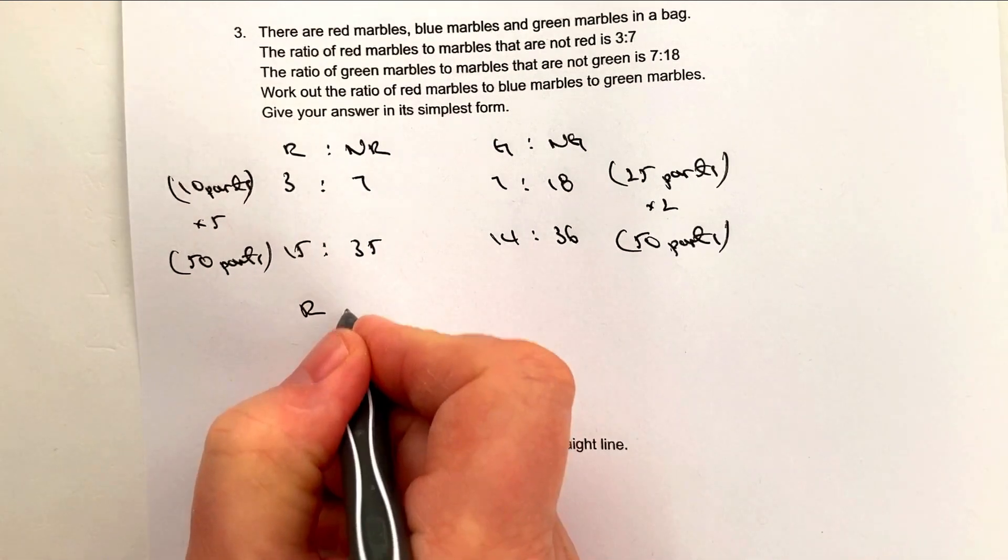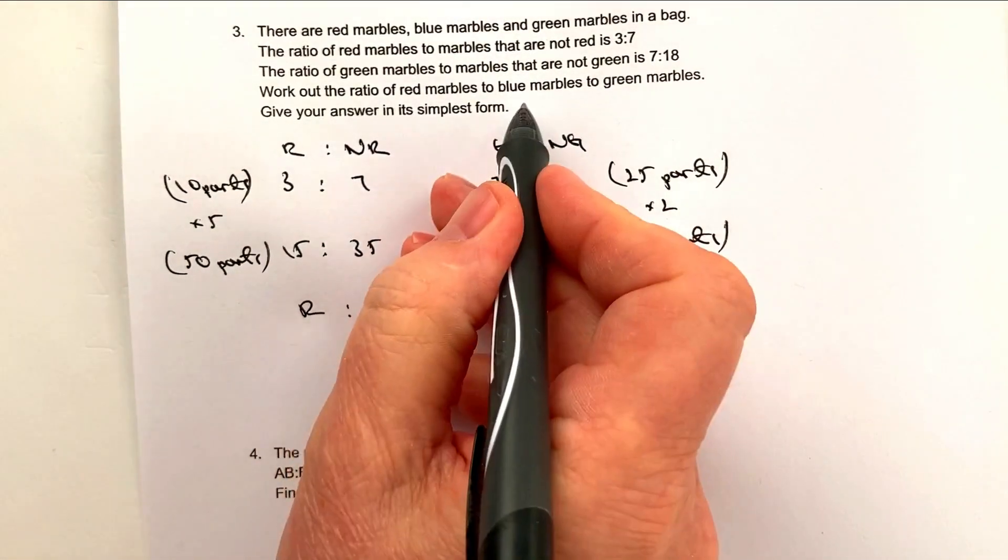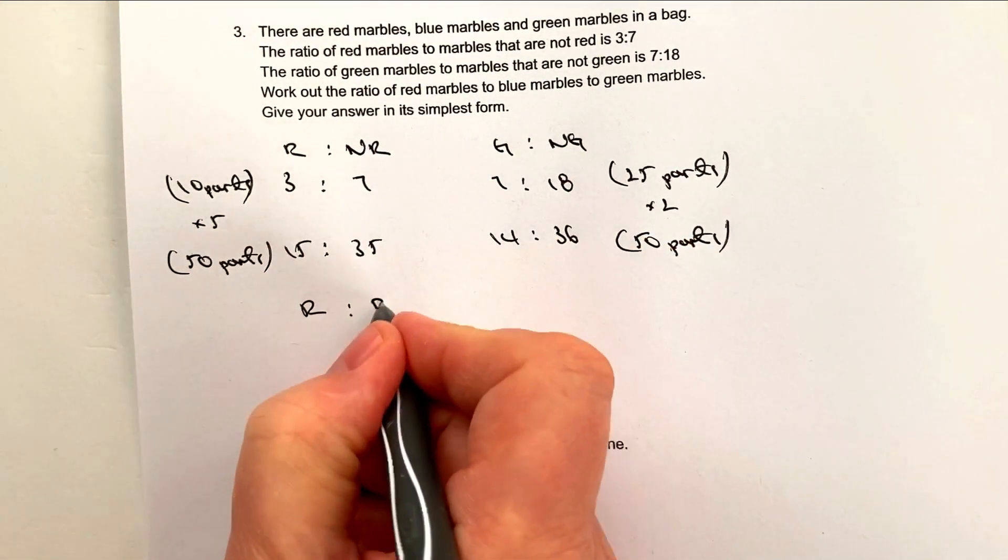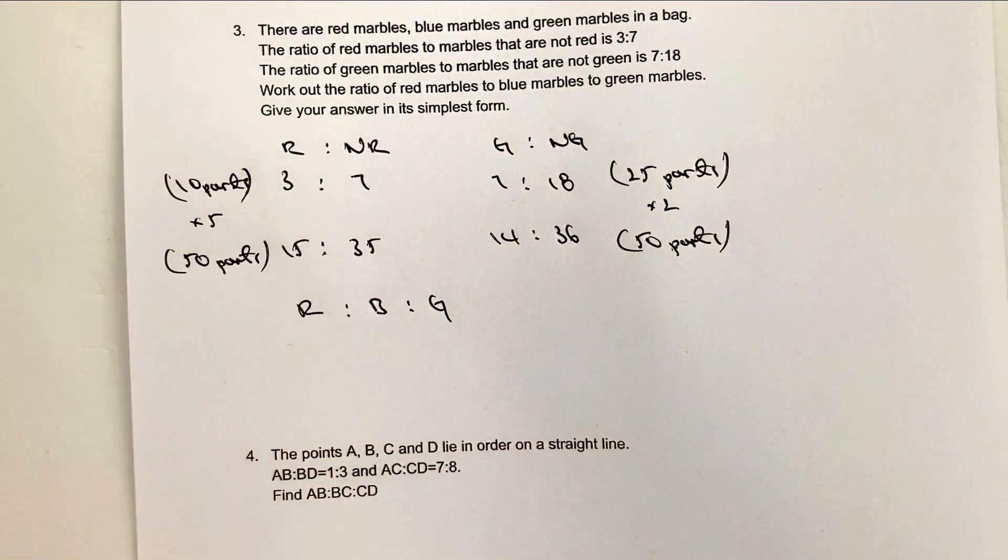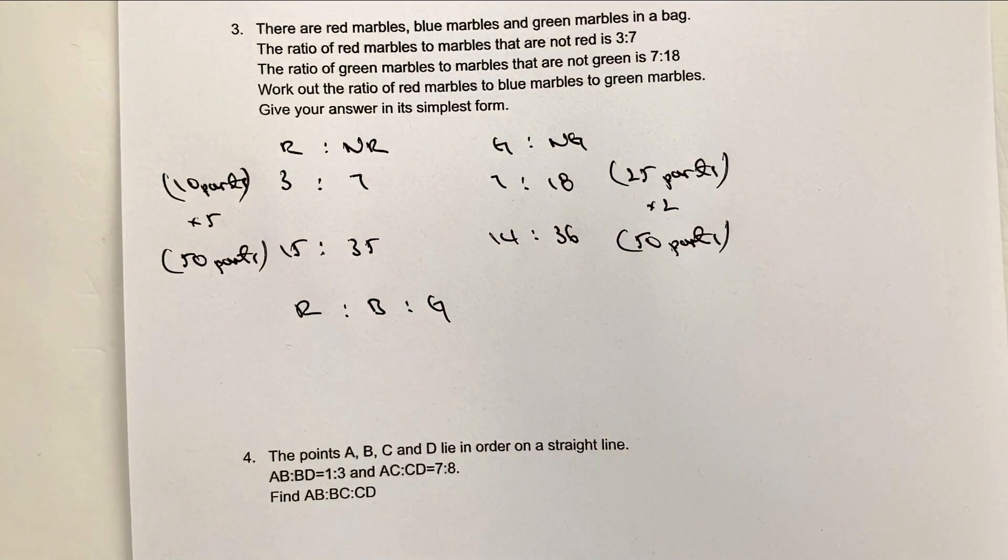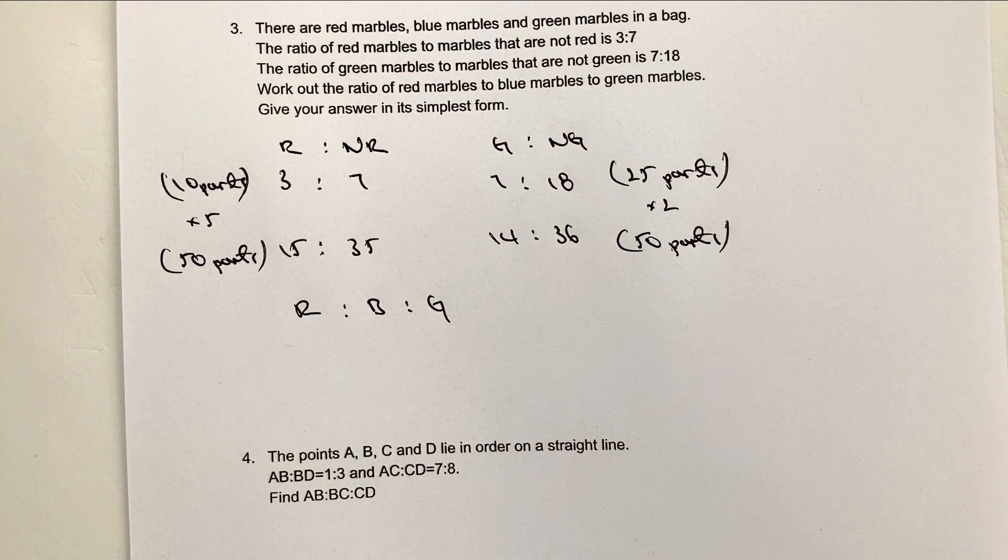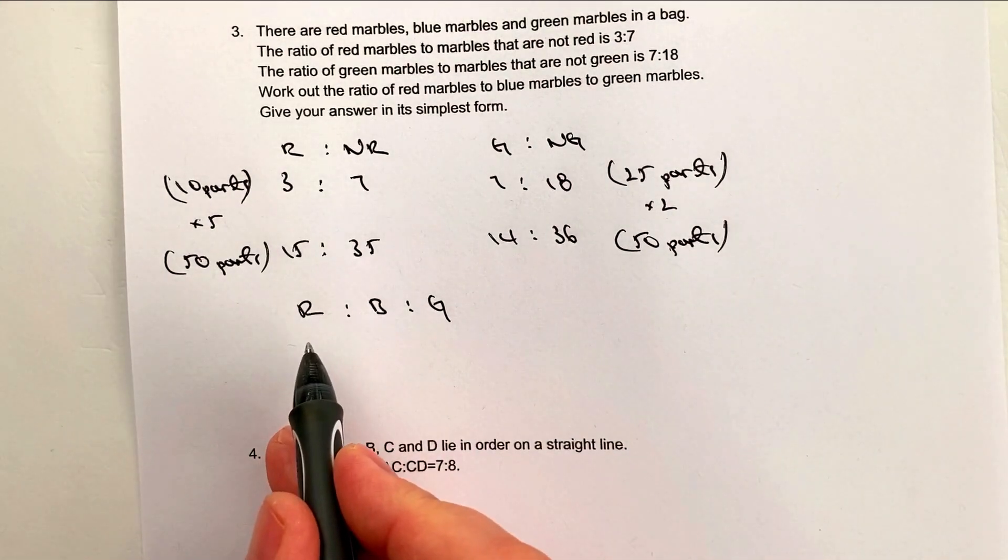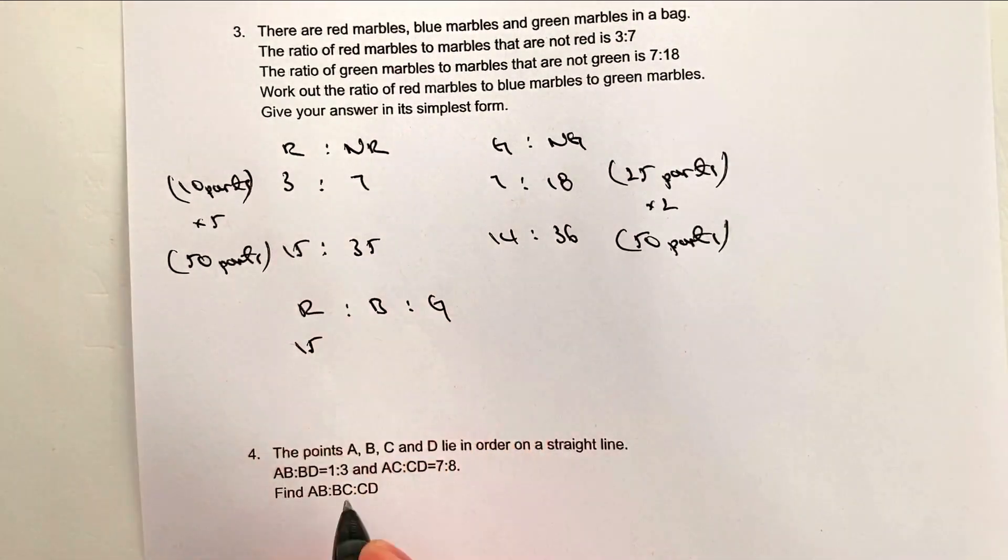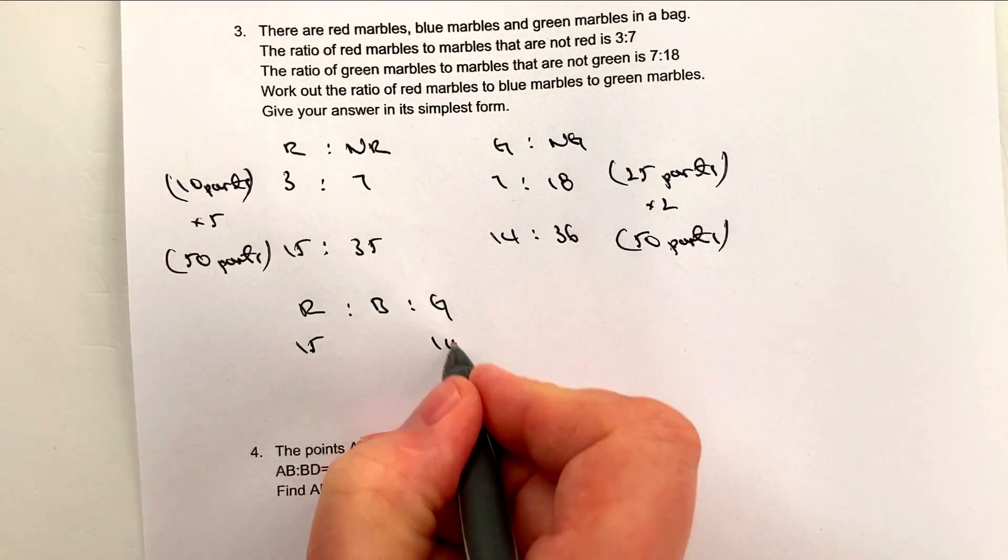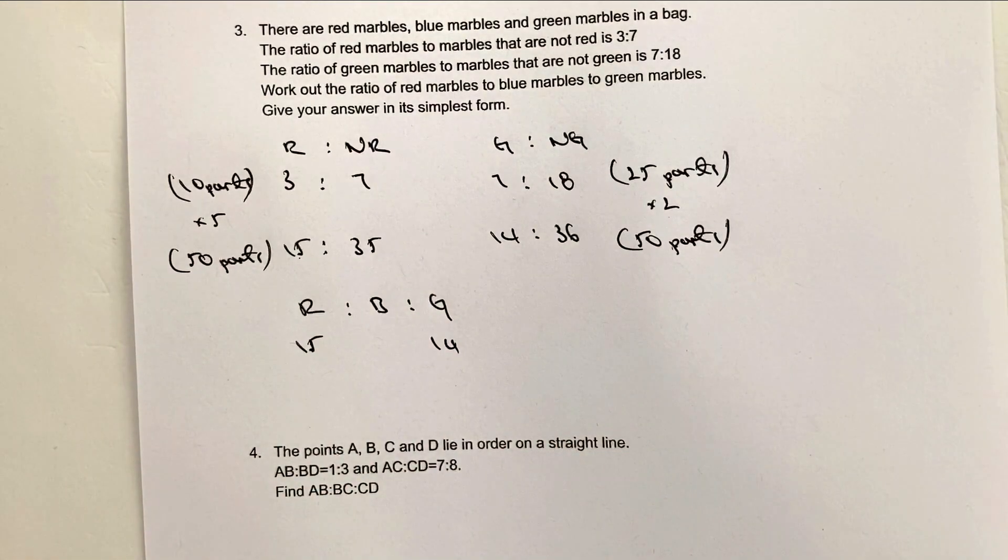Okay, so both cases now, both ratios, I've got 50 parts all together, which means then I can write this as red to blue to green, which is what the question is asking. Always be very careful about these because sometimes, and I do it myself, you can kind of lose marks if you don't go back to the question and just make sure you get the right ratio.